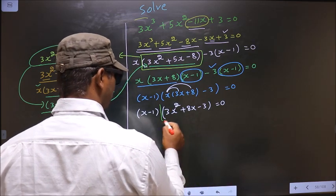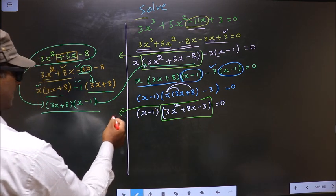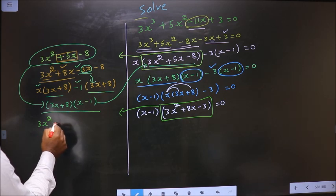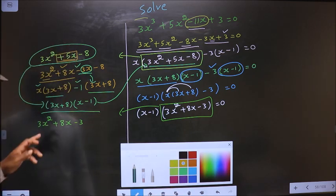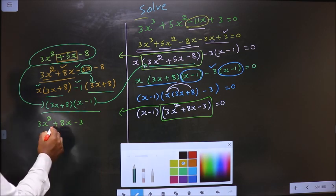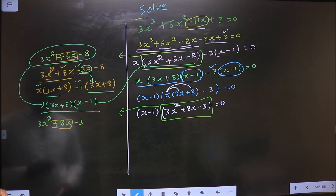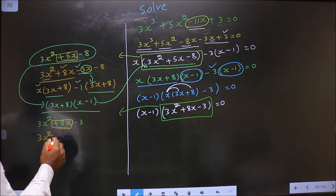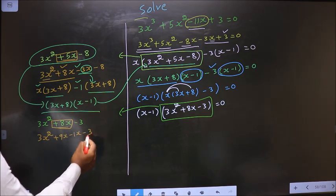So now here I got a quadratic. I will factorize this quadratic: 3x square plus 8x minus 3. To factorize this, we should change the middle term, that is plus 8x. So 3 into 3 is 9, and 9 minus 1 is 8. So in place of 8x, now we should write plus 9x minus 1x minus 3.